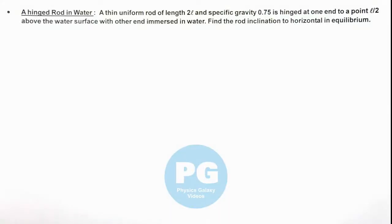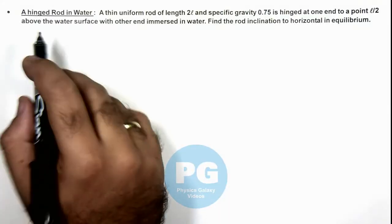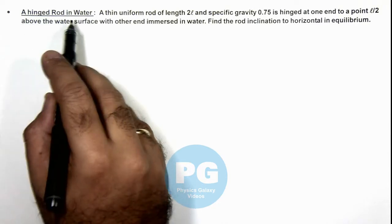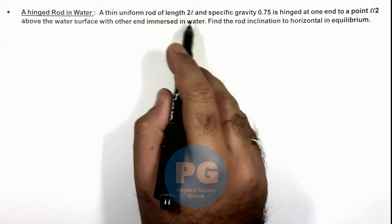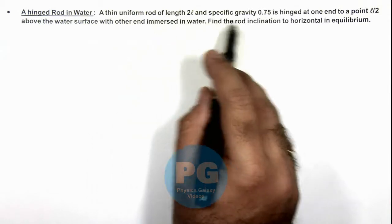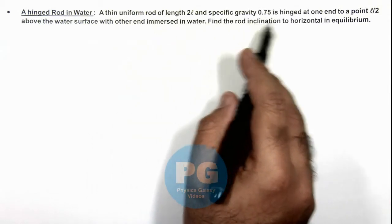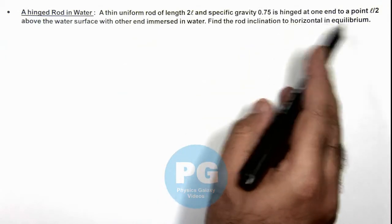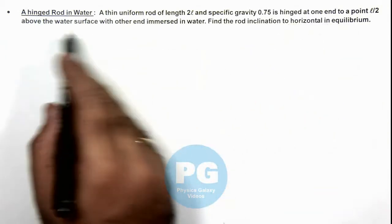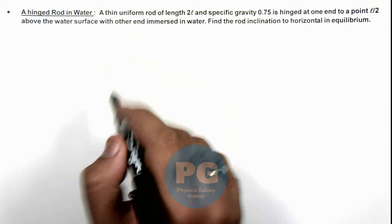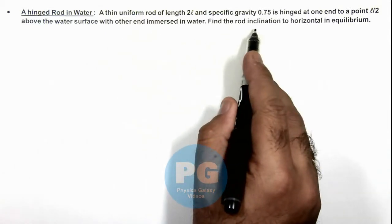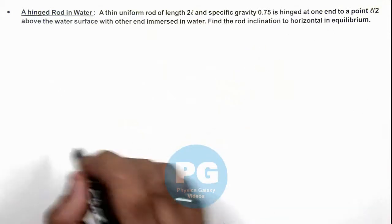In this illustration, we'll analyze the case when a rod is hinged in water. We are given that a thin uniform rod of length 2l and specific gravity 0.75 is hinged at one end to a point l/2 above the water surface with the other end immersed in water. We are required to find the rod inclination to horizontal in equilibrium.